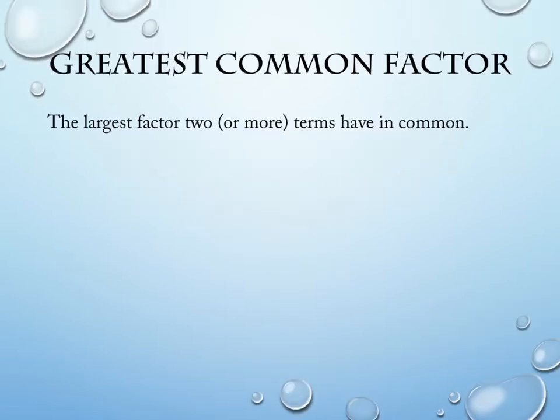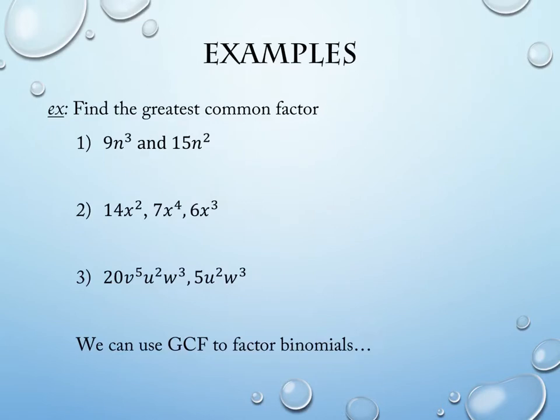To start, we're going to look at something we've seen before: greatest common factor. A greatest common factor is the largest factor that two or more terms have in common. The first few examples are going to look like individual terms given to us — not full expressions with addition and subtraction between them, just individual pieces we're examining.